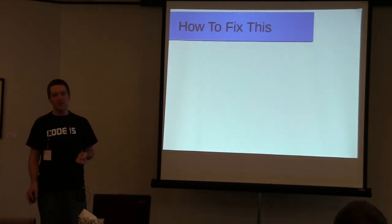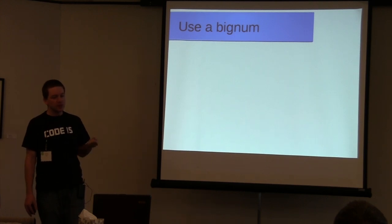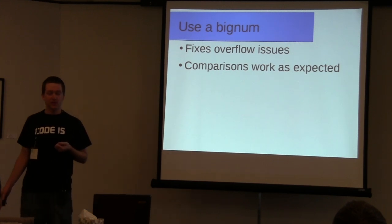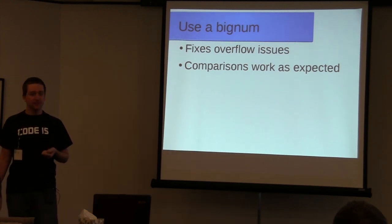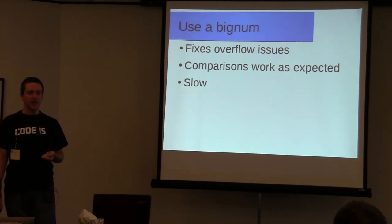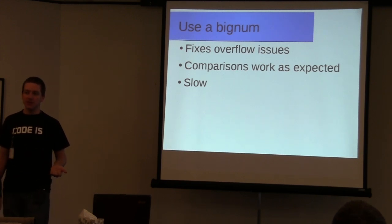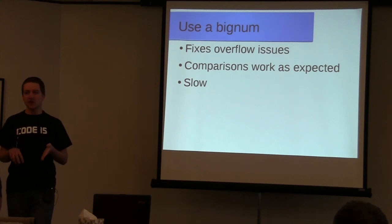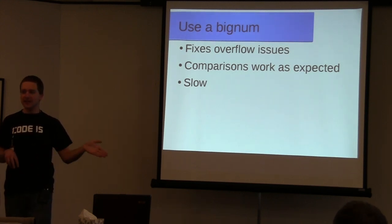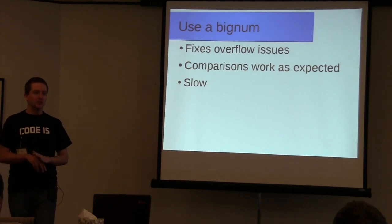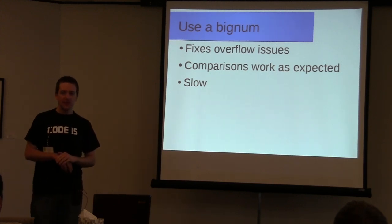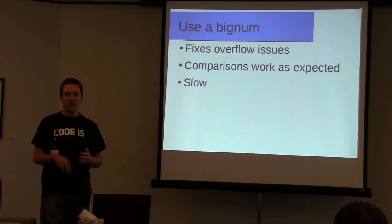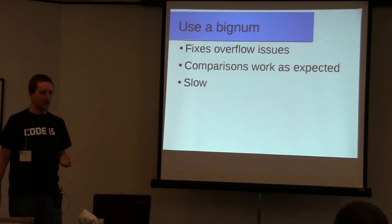So the question is, how do we fix this? One possible solution: use a big num. This fixes overflow issues and comparisons work as expected. But in exchange, it's slow — you have a heap allocation every time you create it, indirect operations and indirect comparisons, and the compiler doesn't necessarily know that your internal pointer type doesn't alias some other pointer. It leads to pretty significant performance penalties, so for any high-performance application or memory-constrained systems, this is basically thrown out to begin with.